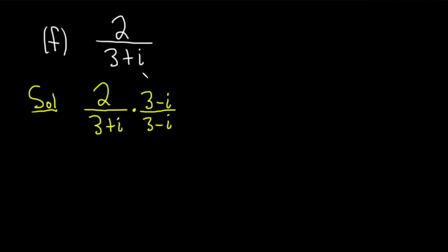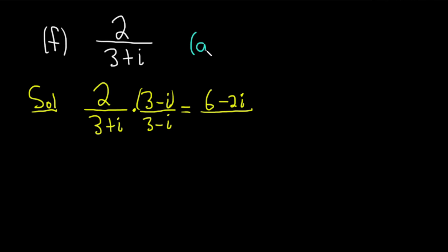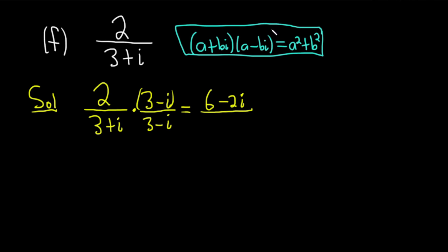This is a powerful technique: whenever you're dividing by a complex number, multiply by the conjugate. The conjugate of (3 plus i) is (3 minus i). In the numerator, multiply straight across: 2 times 3 is 6, and 2 times negative i is negative 2i. For the denominator, use the formula: (a + bi)(a − bi) = a² + b². This is a very powerful formula for complex numbers.